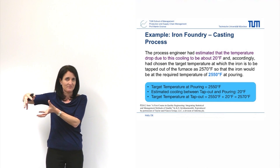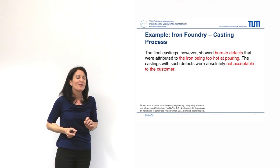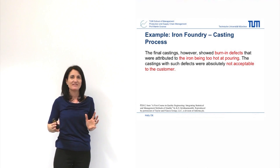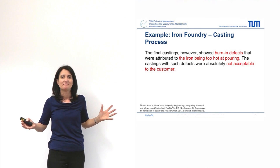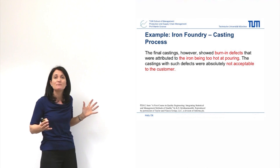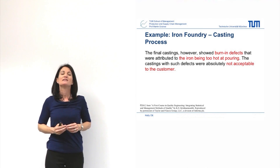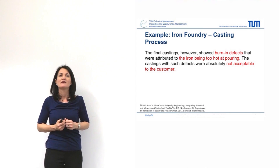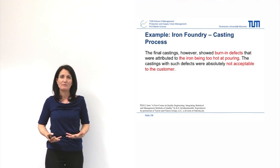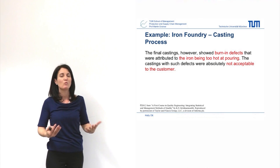That is your target. The problem is the customer gets the final castings and has burn-in defects. What they've attributed these burn-in defects to is that the pouring temperature is too hot. Everything that has burn-in defects has to be scrapped — it is not acceptable quality. So, quality engineer, what are you going to do?